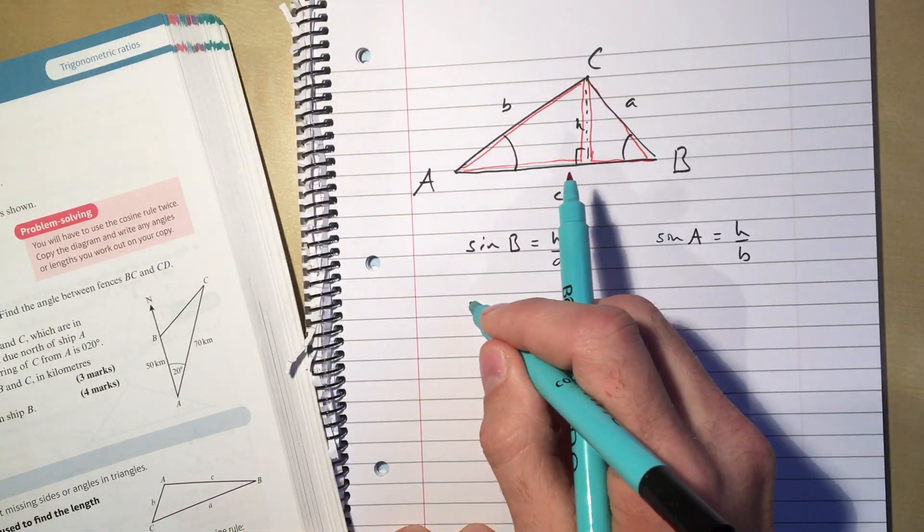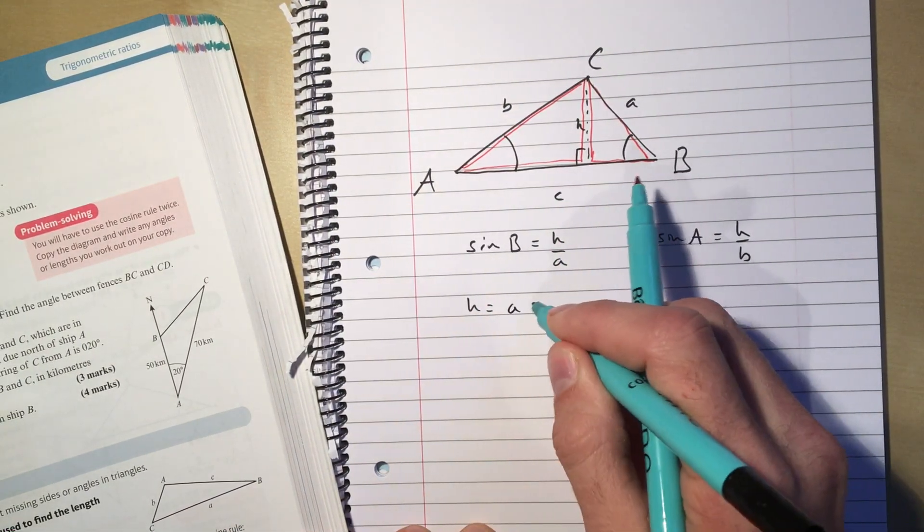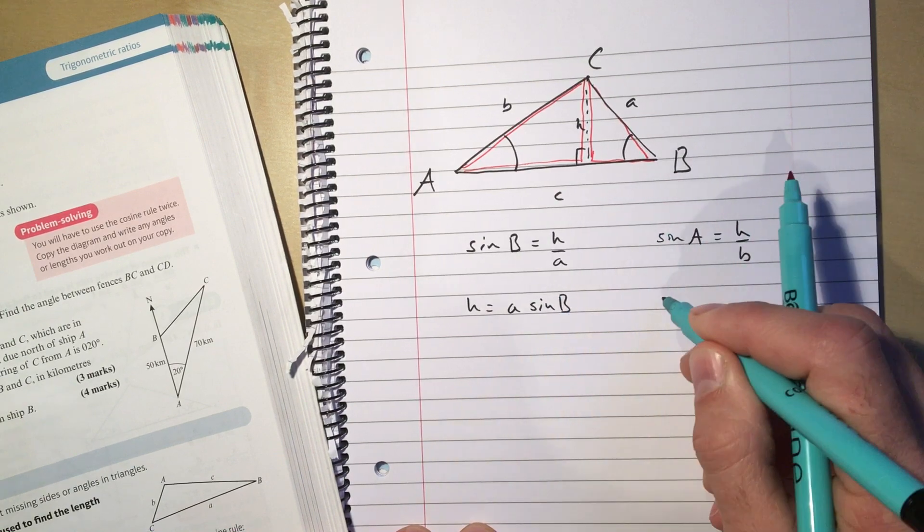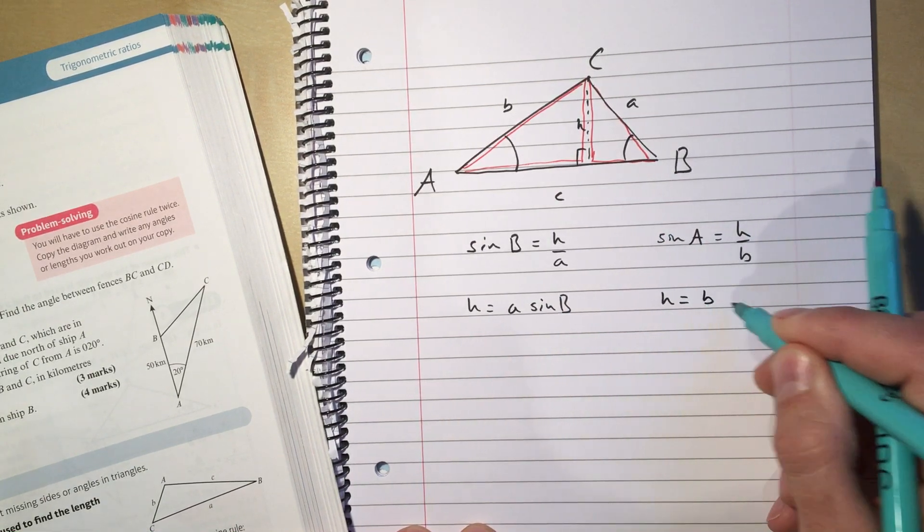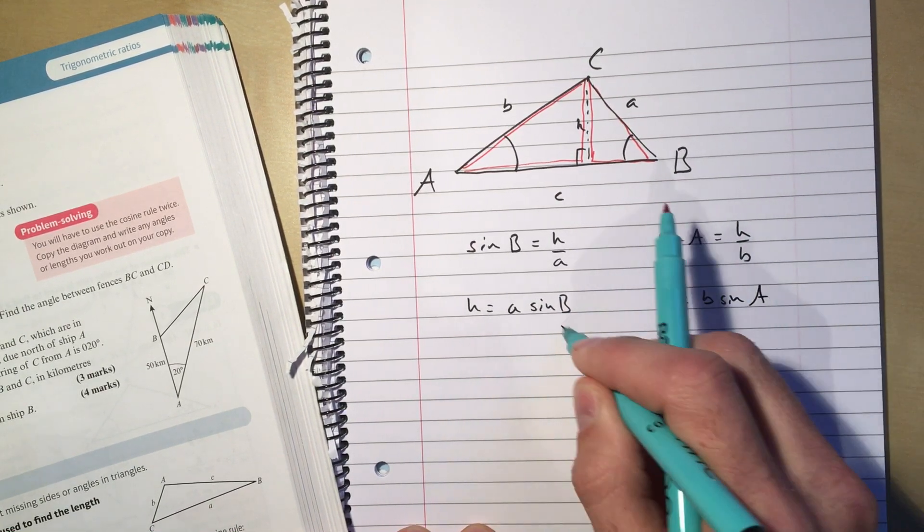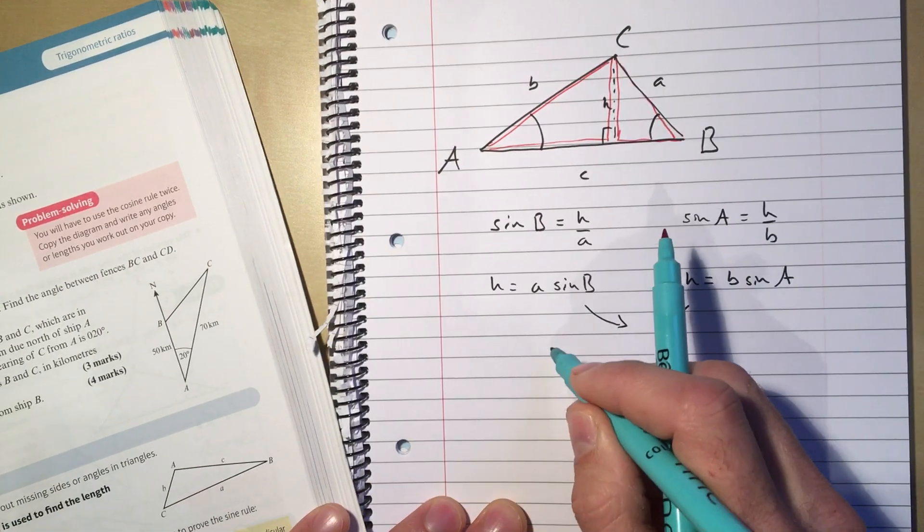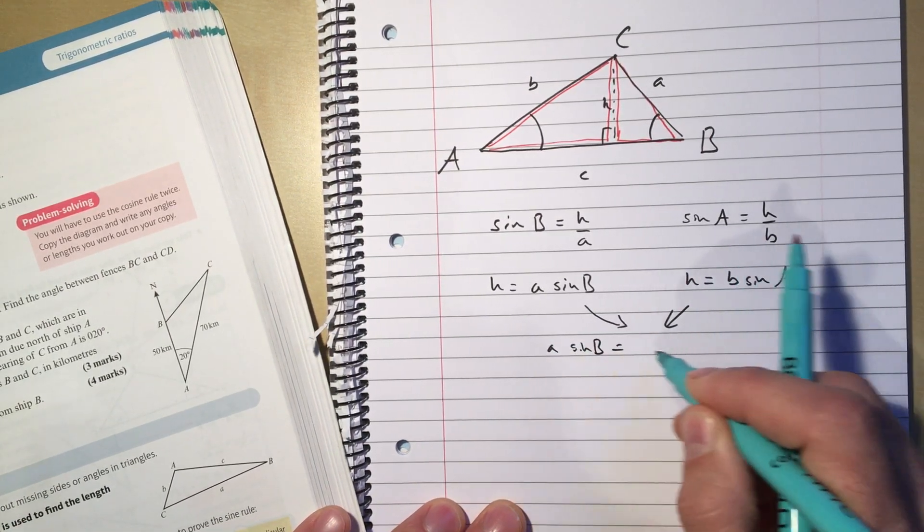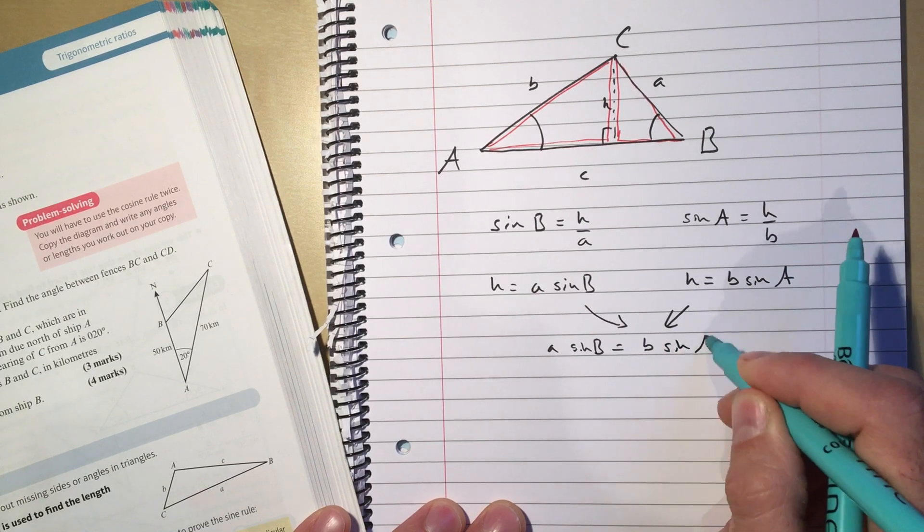And if I work with that I get H equals A sine B and H equals B sine A, and if I put those two equations together I get A sine B equals B sine A.